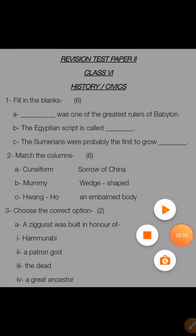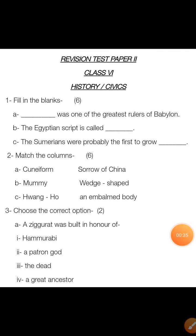As you can see on the screen, this is your revision test paper which contains 20 marks. First, you can see fill in the blanks. The first one is: blank was one of the greatest ruler of Babylon. The second one is: the Egyptian script is called blank. The third one is: the Sumerians were probably the first to grow blank.